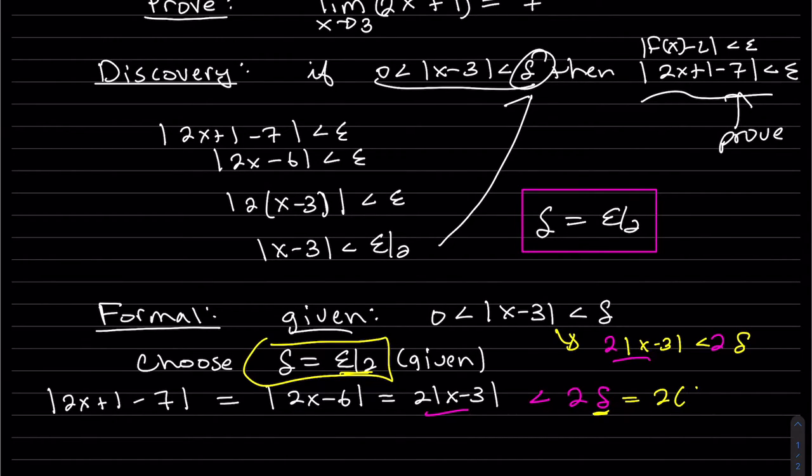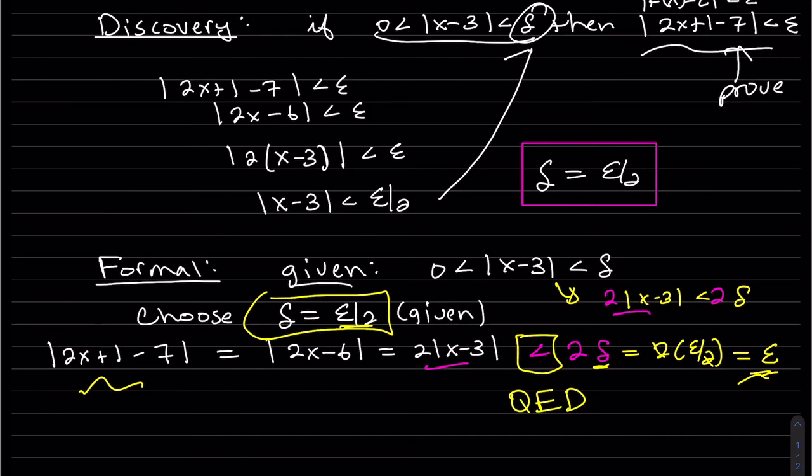Do our substitution right here. Instead of delta, it's epsilon over 2. The 2s cancel. So we have proved our limit using the given, the two givens.